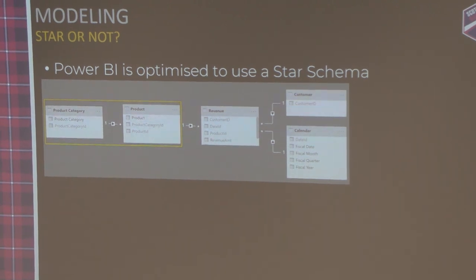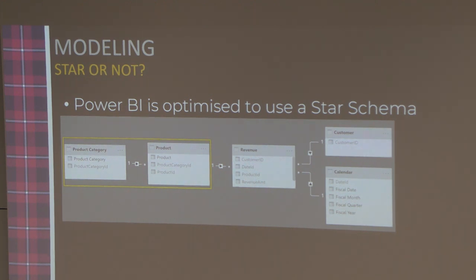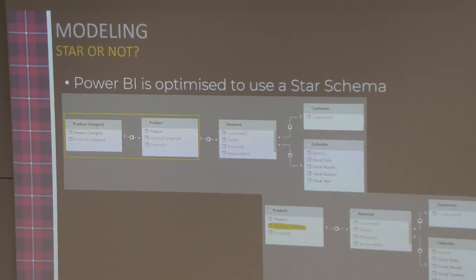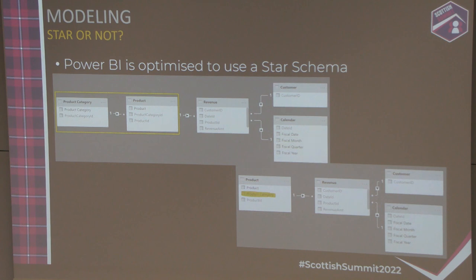Next is snowflaking. Power BI supports snowflaking - adding additional flakes on our star schema. It's perfectly fine, but if you can avoid it, avoid it. Especially in cases where you have product category and product separated: if there is no real use case to keep them separate, try to put them together. Each and every additional relationship creates complexity in your model, and without going deep into DAX and the concept of expanded tables, creating a snowflake means each query needs to traverse to an additional relationship, which slows it down and increases the size of your model.